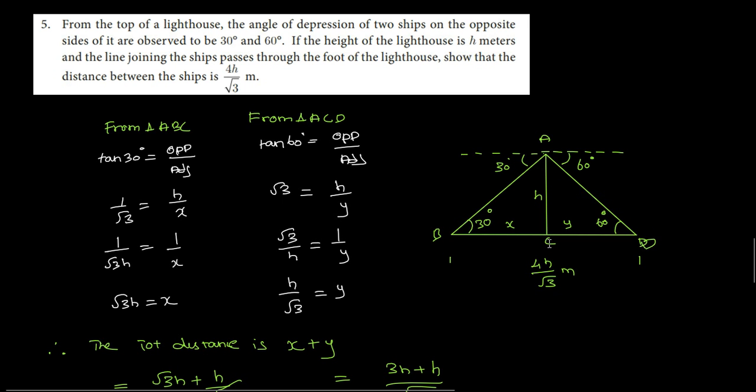So here on the lighthouse AC, the angle of depression is 30, and the angle of depression is 60. So the angle of depression 30 on one side, angle of depression 60 on the other side.